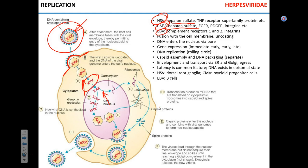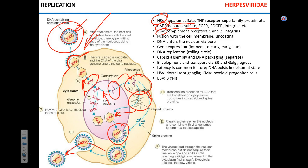The viral DNA enters the nucleus, where gene expression and transcription take place. Viral RNA then moves into the cytoplasm for translation, and the viral proteins are transported back into the nucleus to assemble the capsid.